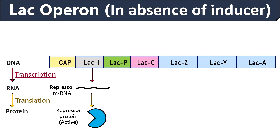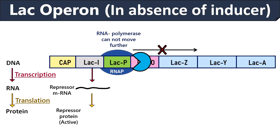Now let us discuss the lac operon model in the absence of inducer or lactose. Again the lacI gene will produce lacI repressor protein. When there is no lactose in the surrounding, the repressor protein becomes active and it binds to the operator region by blocking the further movement of RNA polymerase. As a result, there will be no transcription and translation. Therefore, an E. coli cell uses the lac operon system when it has lactose only in the surrounding, but if there is enough glucose in the surrounding, then the cell will not utilize lactose or the cell will not waste its energy for the metabolism of lactose.